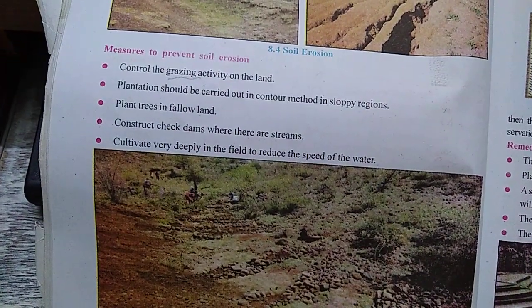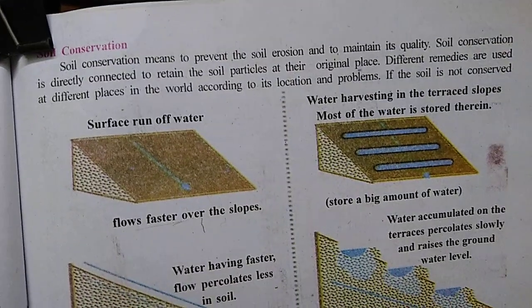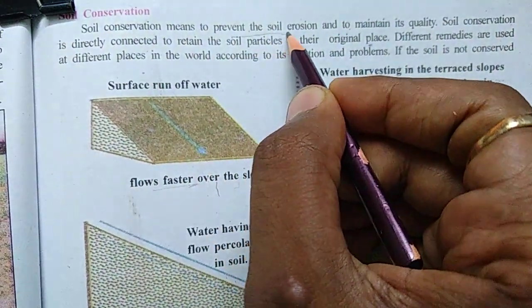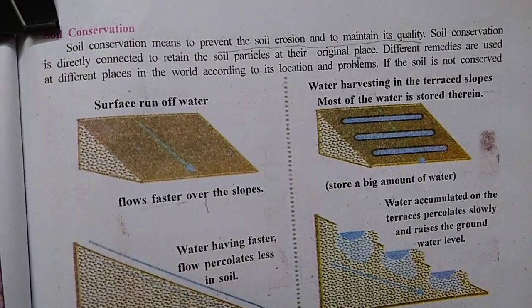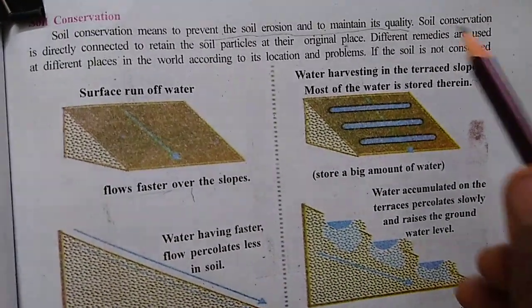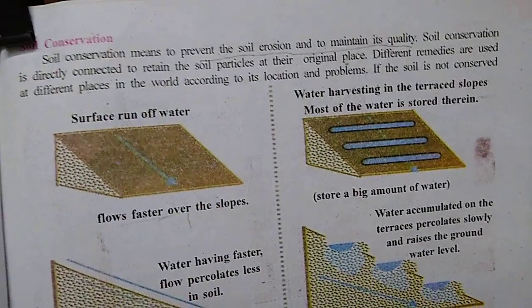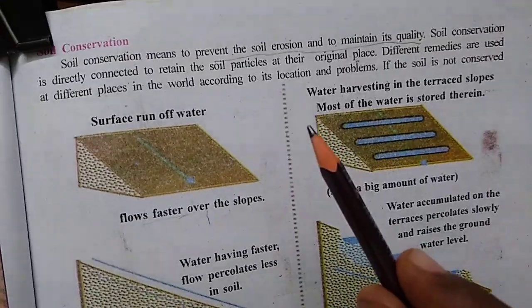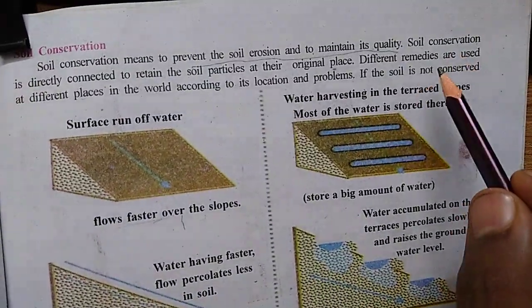These are the measures to prevent soil erosion. The next topic is soil conservation — how we conserve the soil and keep its fertility as it is. Soil conservation means to prevent soil erosion and to maintain the quality of the soil. The quality of the uppermost layer must remain as it is. Soil conservation is directly connected to retaining soil particles at their original place so that fertile soil particles will not move from one place to another.